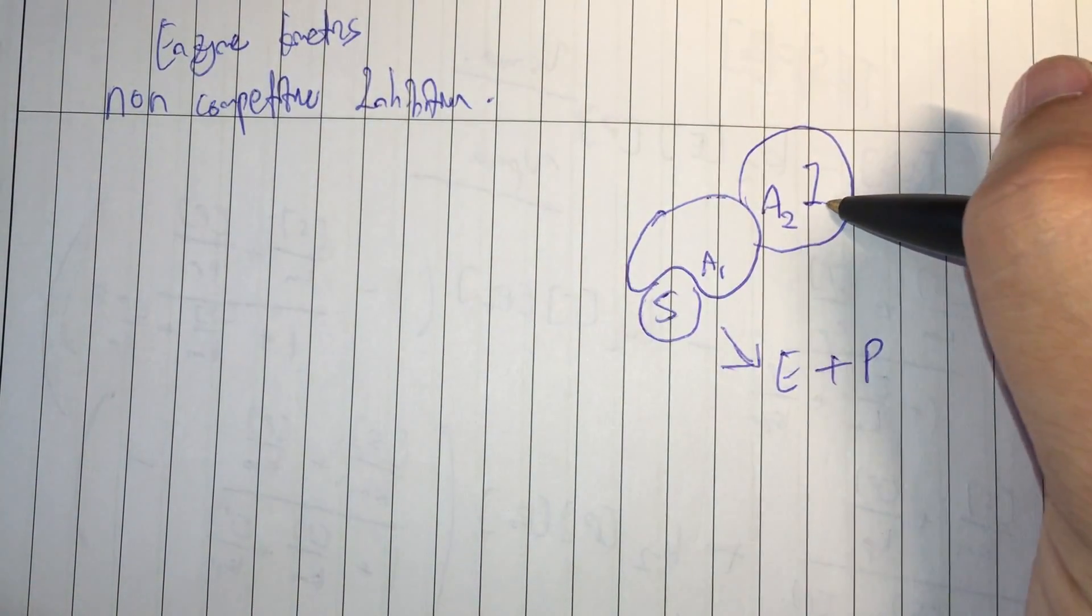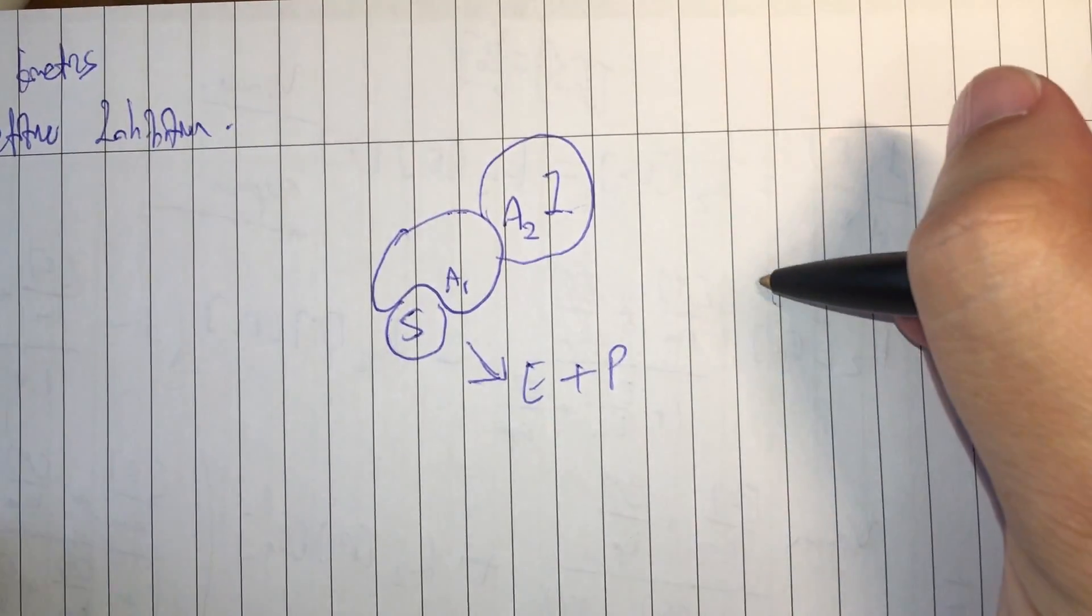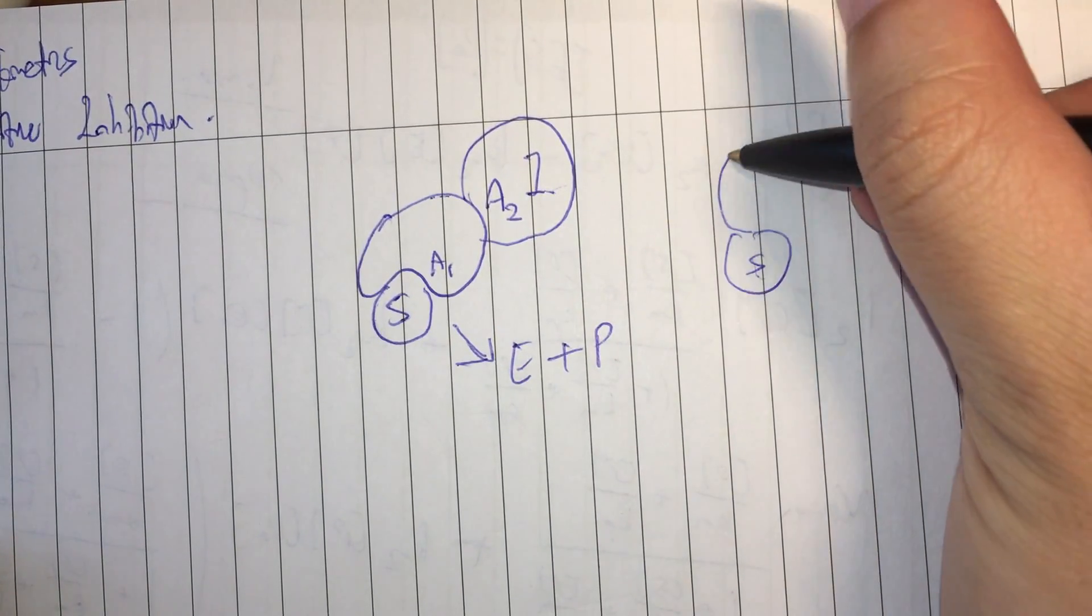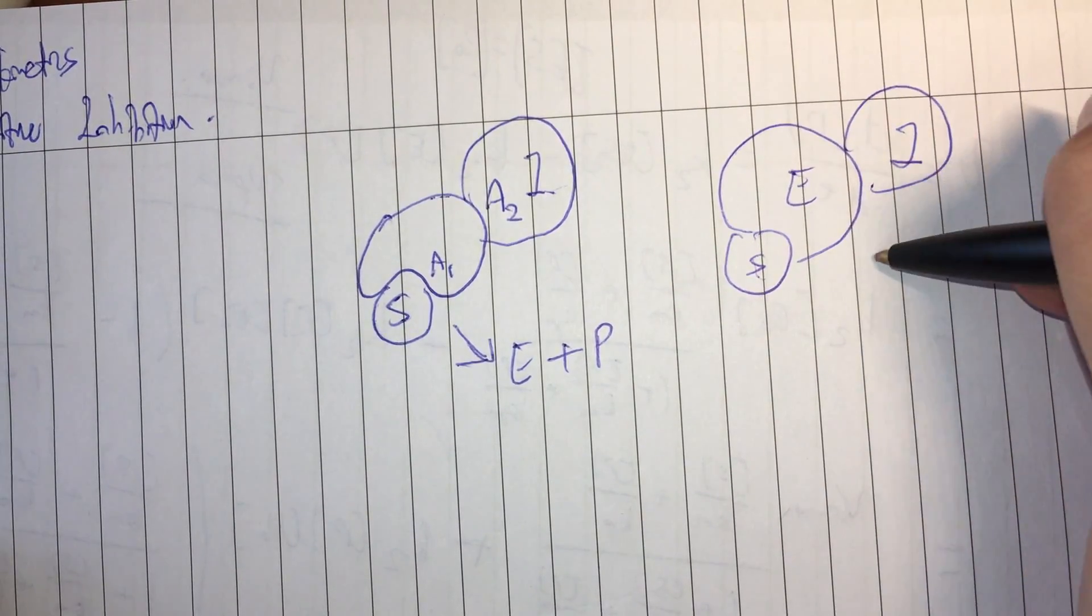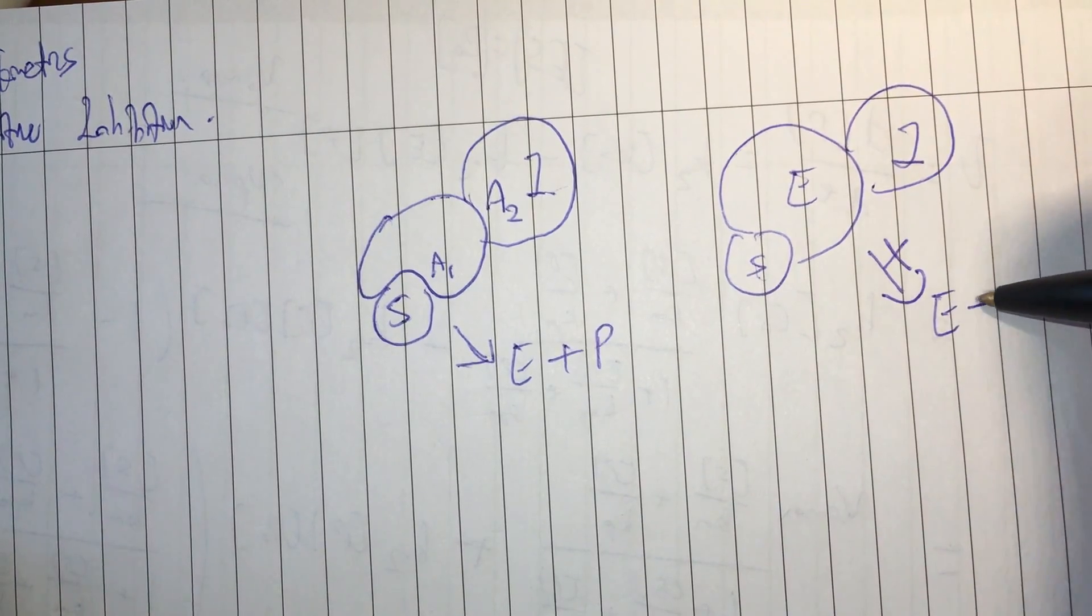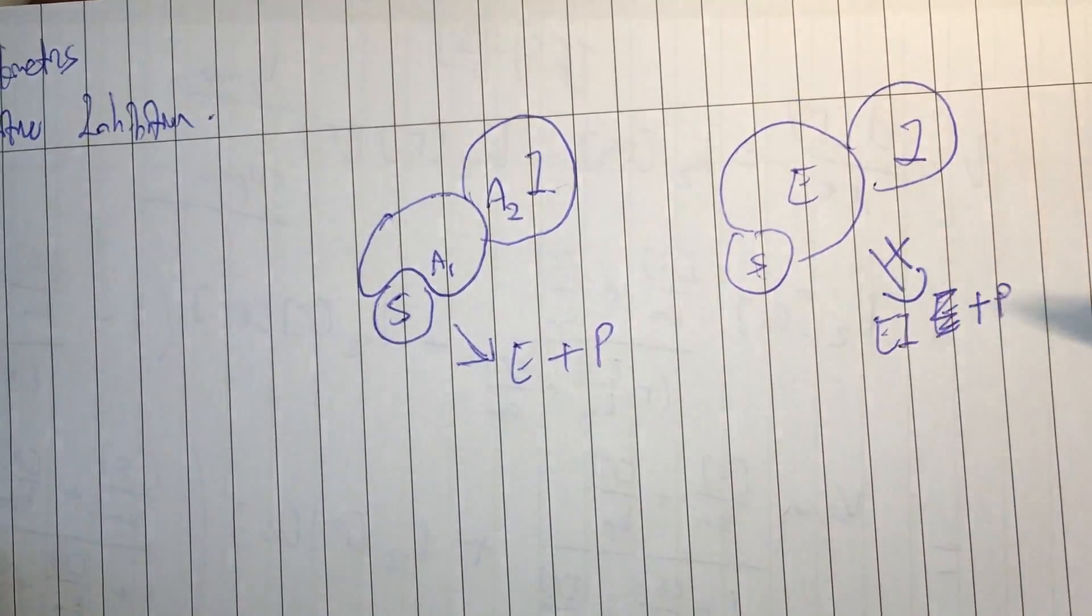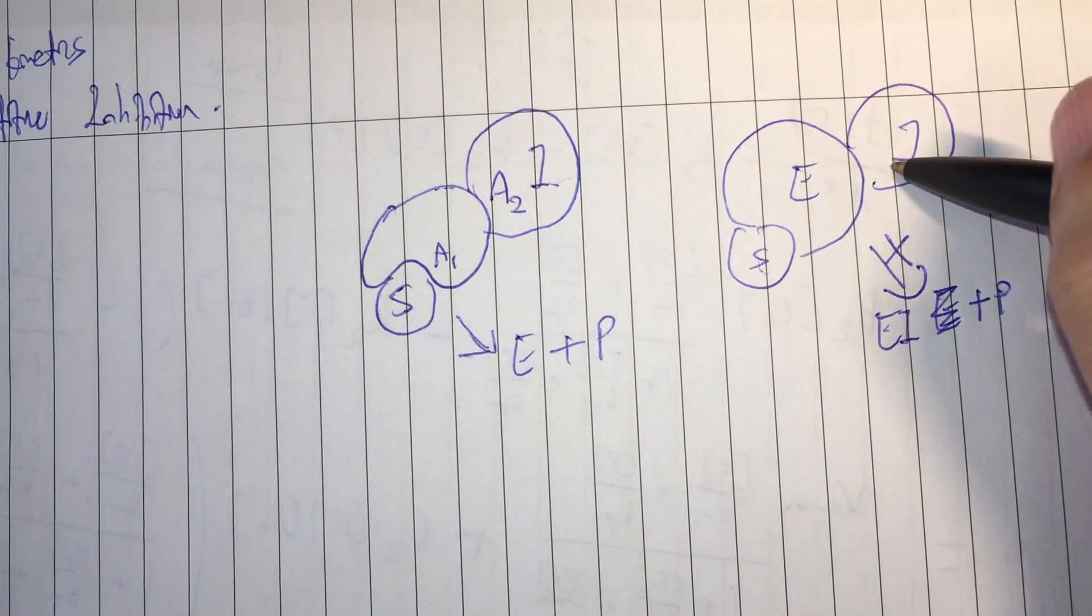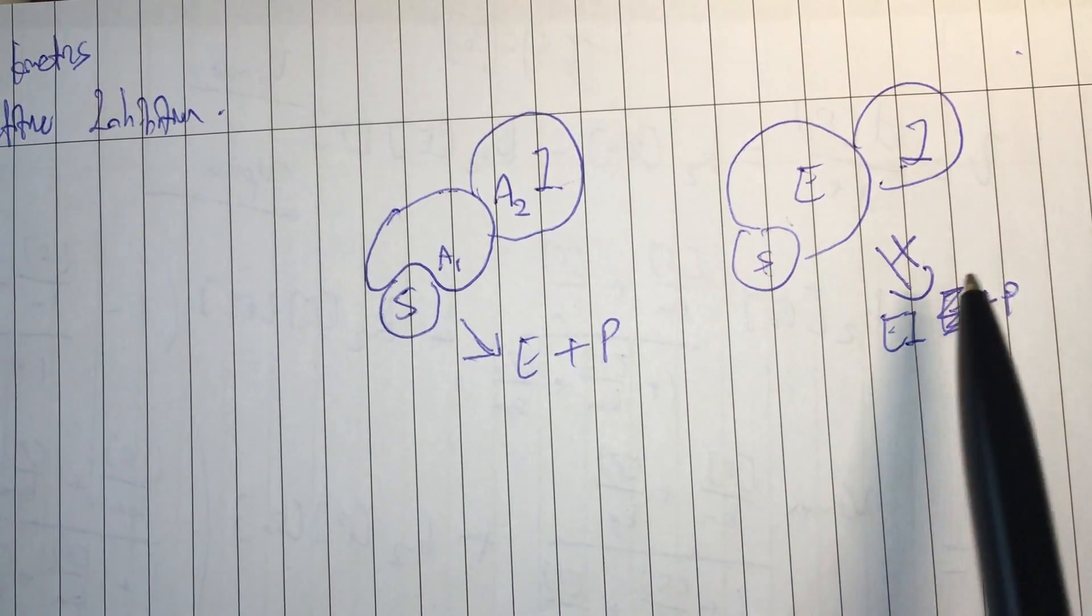When the inhibitor binds onto active site 2, this complex where you have the S, E, and I, it will not react to form E plus P. Or rather, EI plus P. In fact, this must dissociate in order for this reaction to occur.